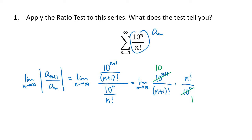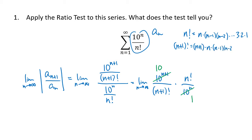What about (n+1) factorial and n factorial? Remember that n factorial is n times (n−1) times (n−2) and so on down to 1, and (n+1) factorial is almost the same thing, except it starts at (n+1). So the only difference is that (n+1) factorial has one extra factor of (n+1), which means n factorial and (n+1) factorial divide out, leaving just the factor (n+1) on the bottom.